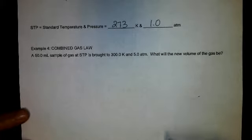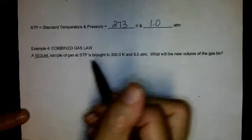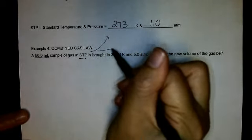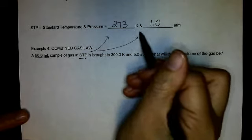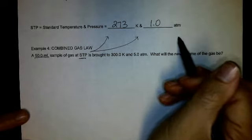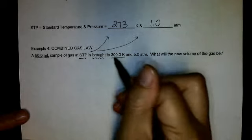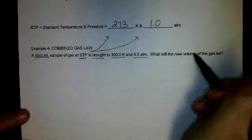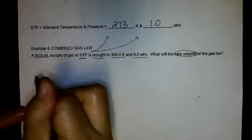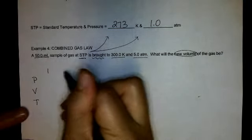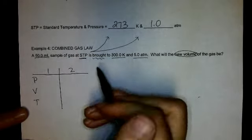So in practice, we have a 50 milliliter sample at STP. So that means my temperature and my pressure is 273 Kelvin, 1 atmosphere. It's brought to 300 Kelvin, 5 atmospheres. I want my new volume. So again, set up the same way, pressure, volume, and temperature, initial and final conditions, so 1s and 2s.